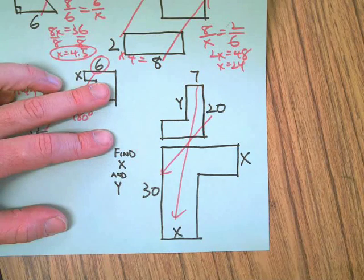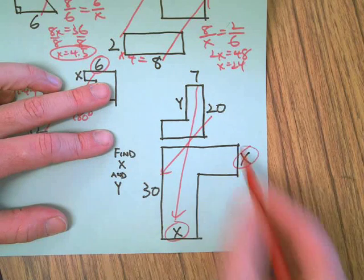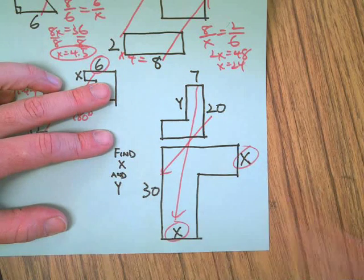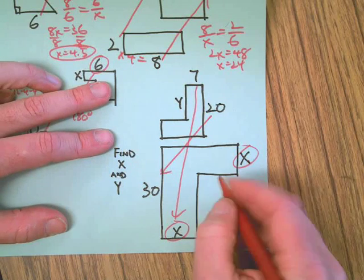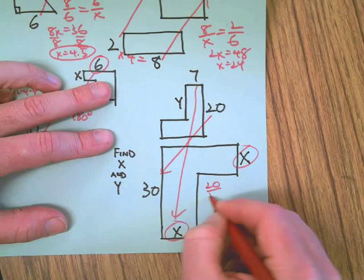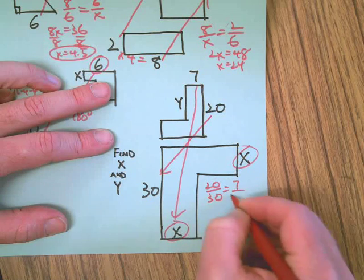And since the X's are the same, whatever this answer is will be the same there. So let's figure that out. Twenty goes to thirty just like the seven goes to the X.